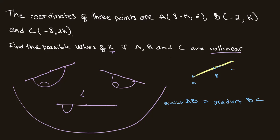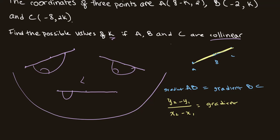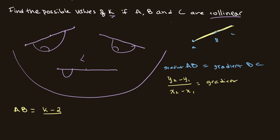All we need to do now is plug this into our equation for the gradient: y2 minus y1 over x2 minus x1, and find an equation for k which we can solve. For the gradient of AB, this will be (k minus 2 minus 2) divided by (minus 2 minus 8 minus k), so divided by (minus 2 minus 8 minus k).